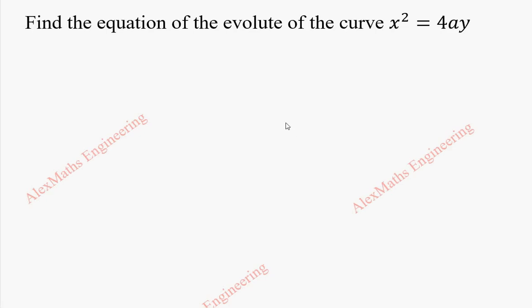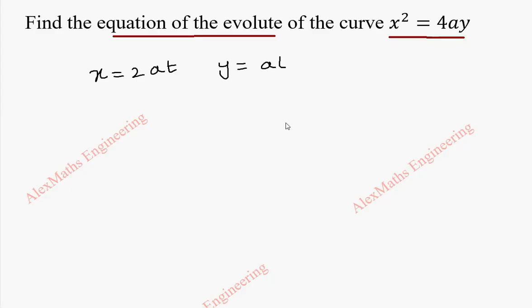Hi students, this is Alex here. In this video, we are going to find the equation of the evolute of the curve x squared equal to 4ay. First we have to write the parametric form. The parametric form for this equation is x equal to 2at and y equal to at squared.